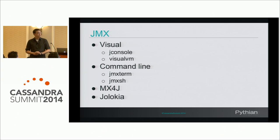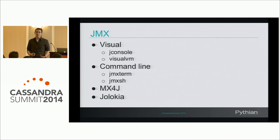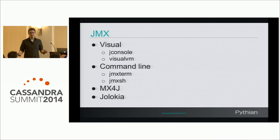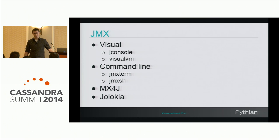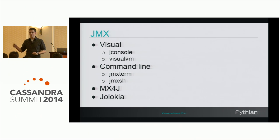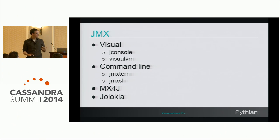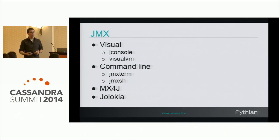There are many ways to access JMX. Visually, you have JConsole and VisualVM, which come with the JDK and many people already have. Providing firewall issues aren't a problem, you can connect right from your system. But I think it's really important to become familiar with the command line versions — the JMX term is great so you can SSH to a system and quickly poke at something not exposed elsewhere. There's also MX4J and Jolokia, which provide SOAP and REST wrappers for your JMX interface.